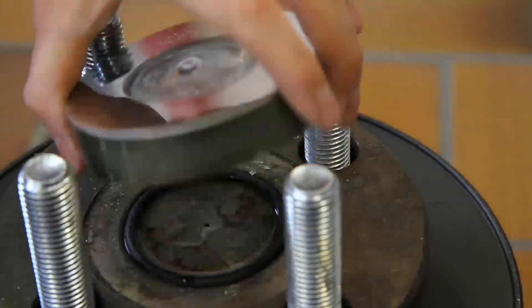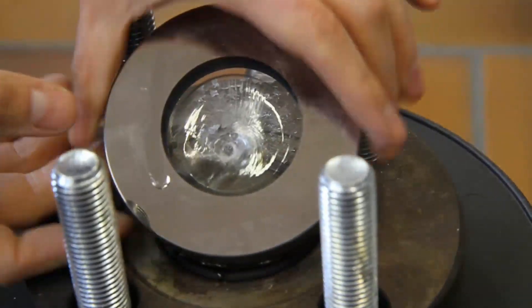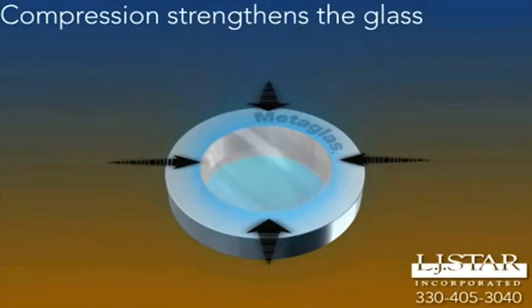One side of the sight glass is chipped, but the product side is smooth and looks unscathed. The steel ring holds the glass in compression, making it strong.